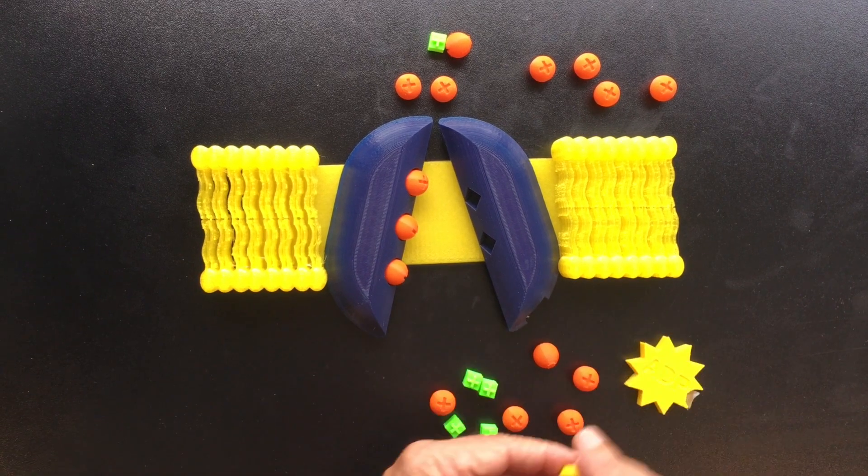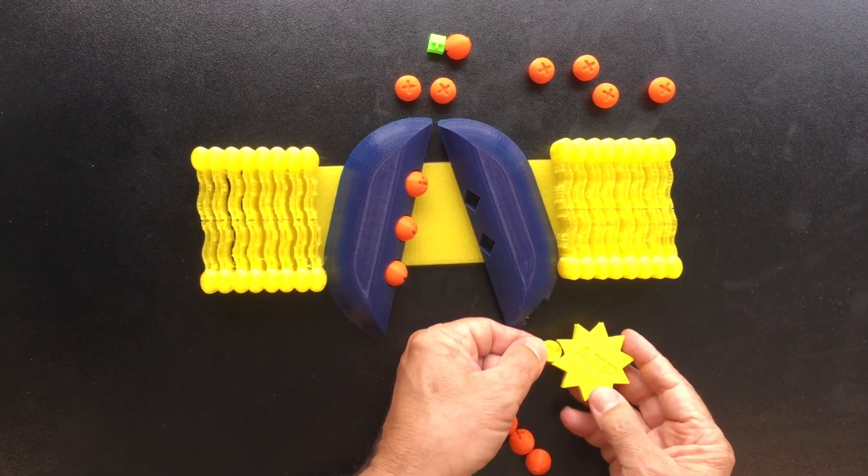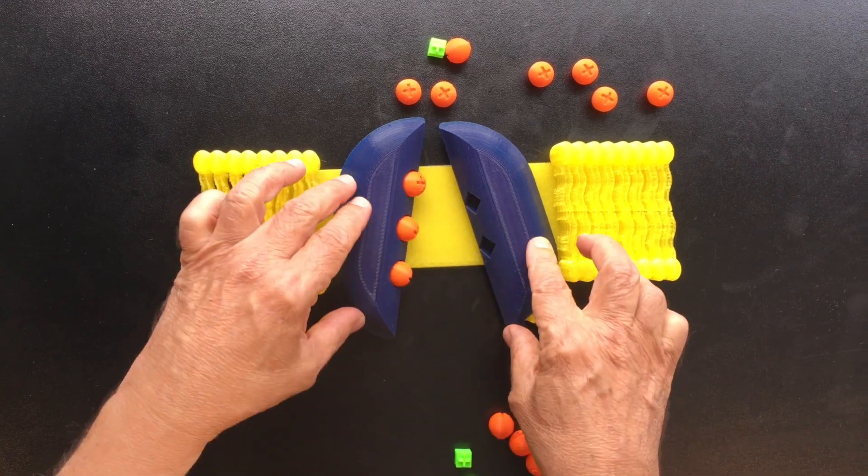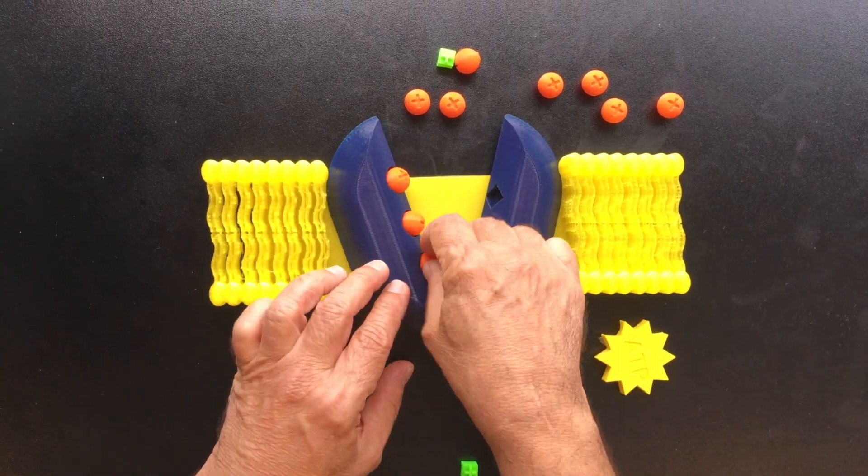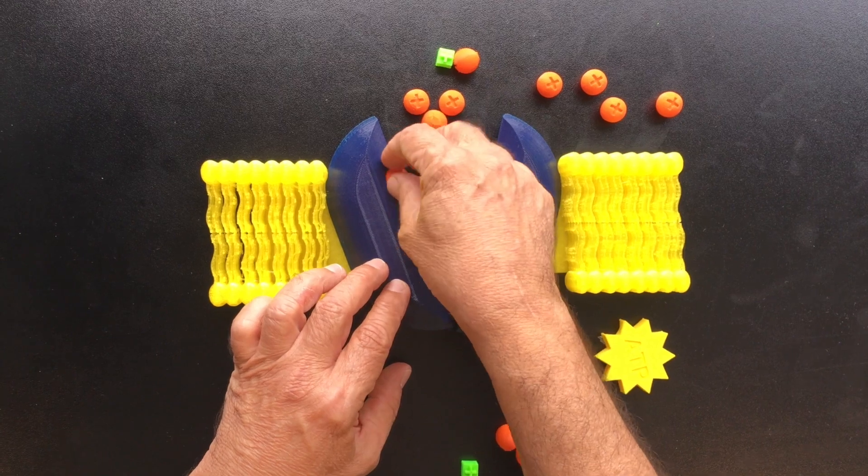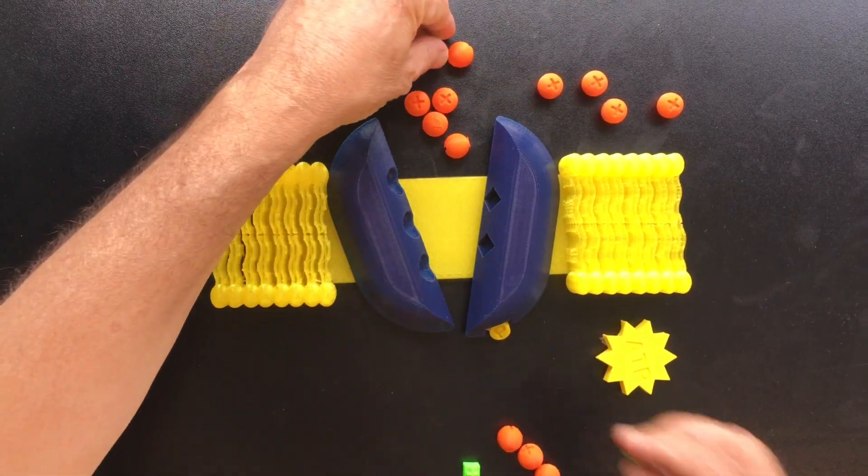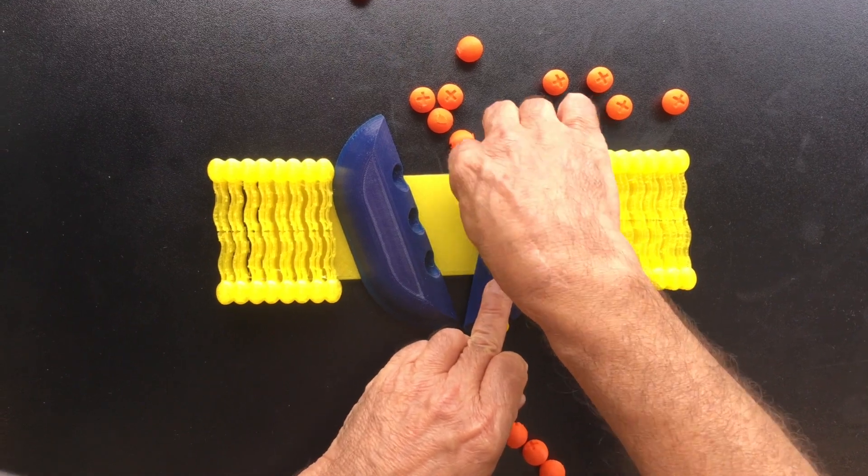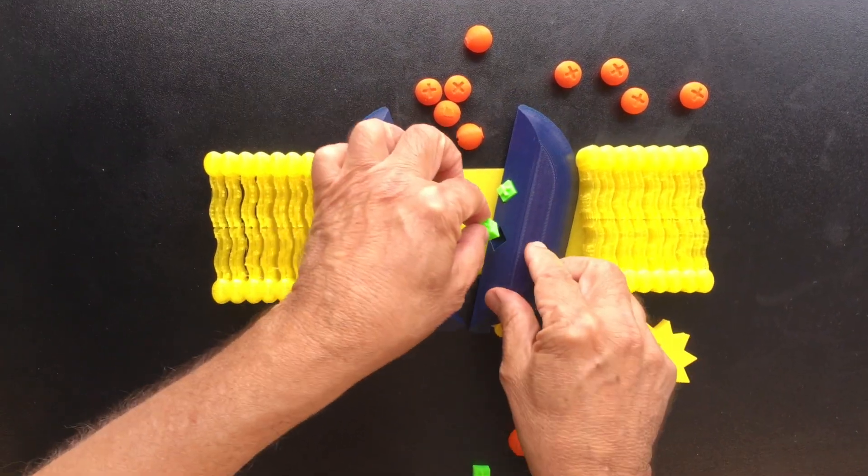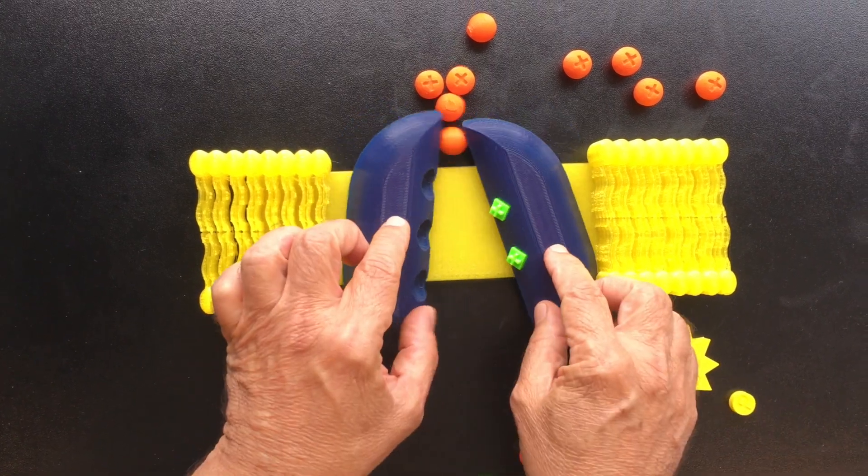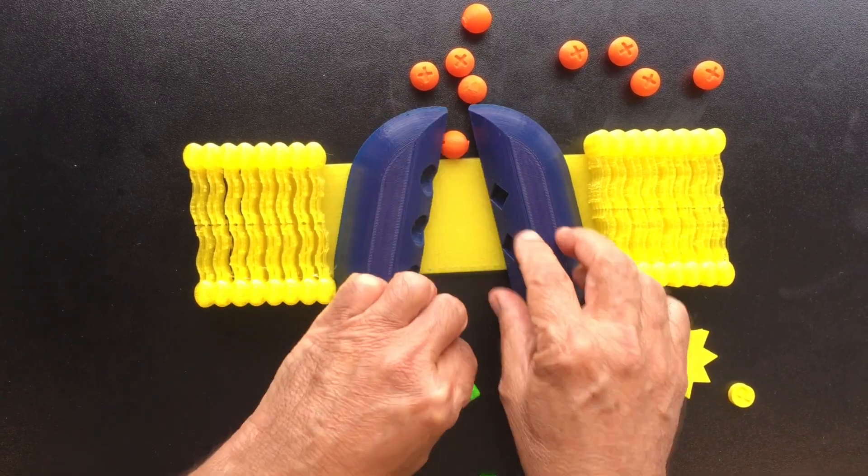The protein will again be phosphorylated, the protein changes its shape, the three sodium ions abandon the cell going externally, and now the potassium ions will be picked up and released inside of the cell.